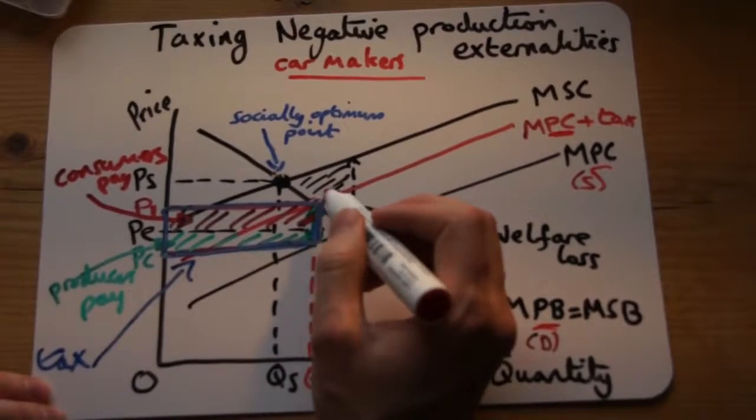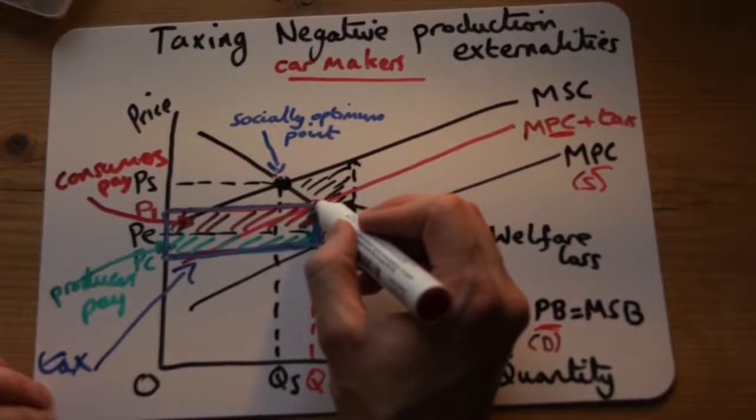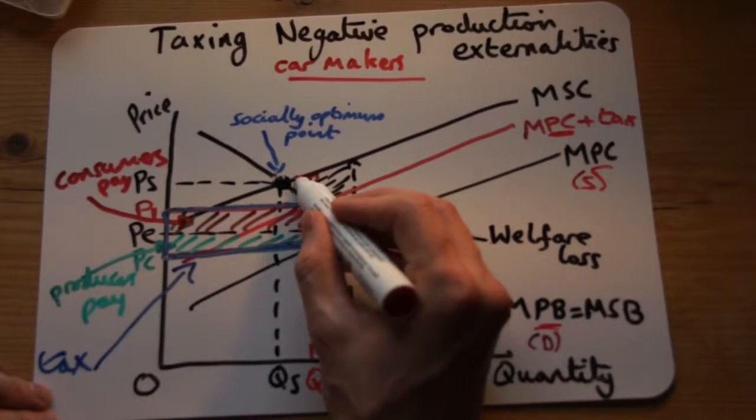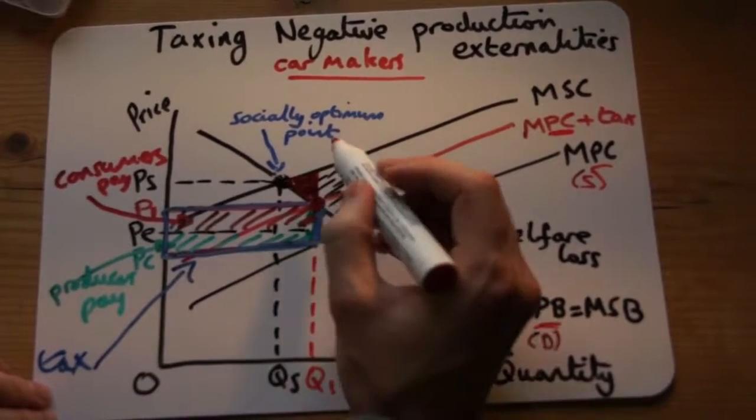Don't forget that we still have a bit of deadweight welfare loss. So go from the new equilibrium up to the socially optimum point, and we still have a little bit there, a little triangle left of welfare loss.